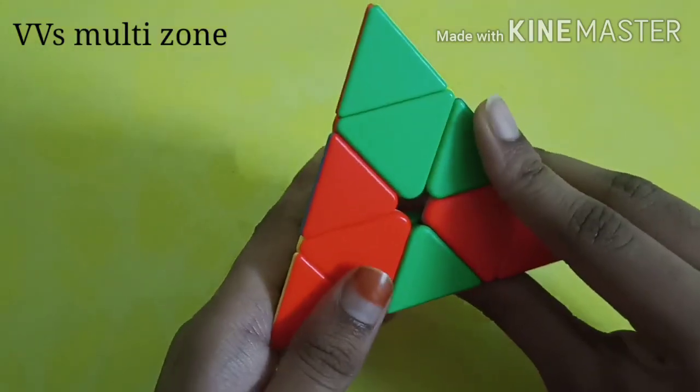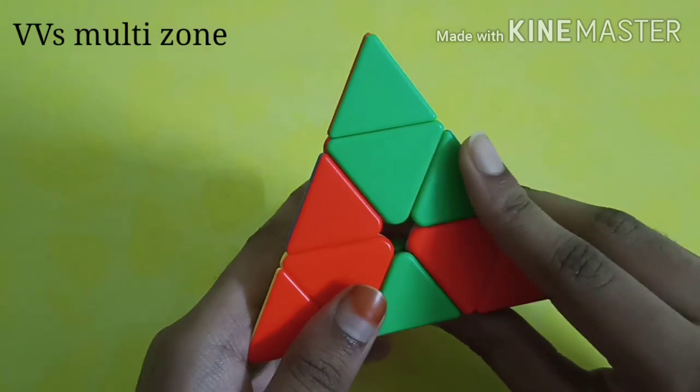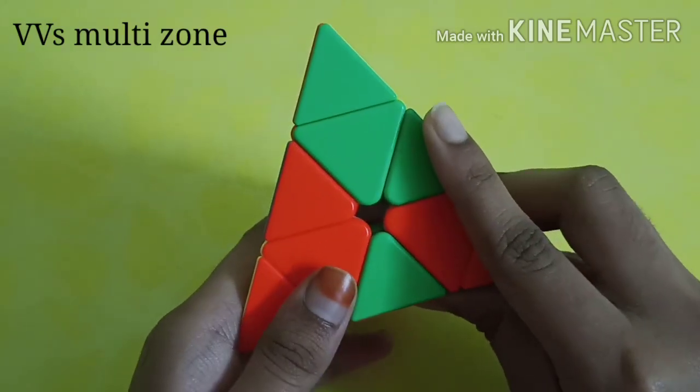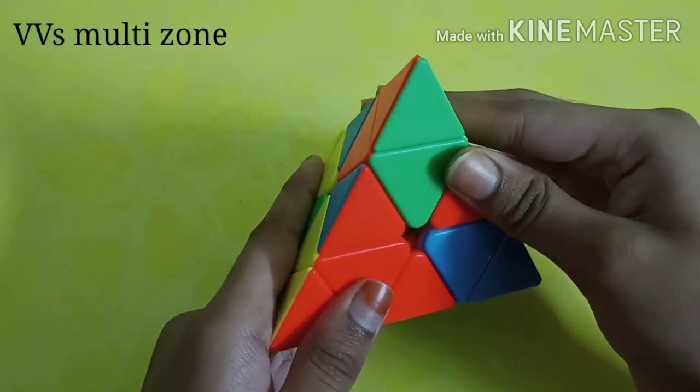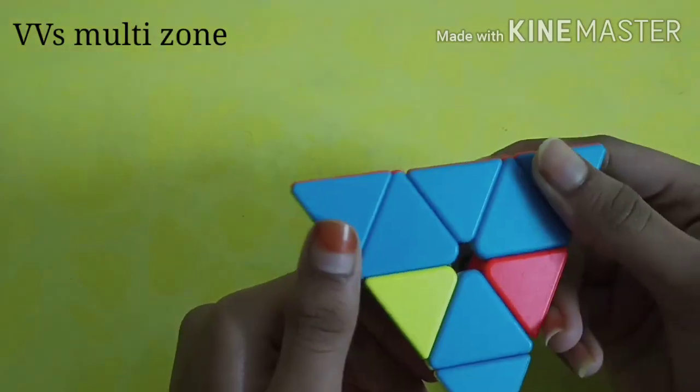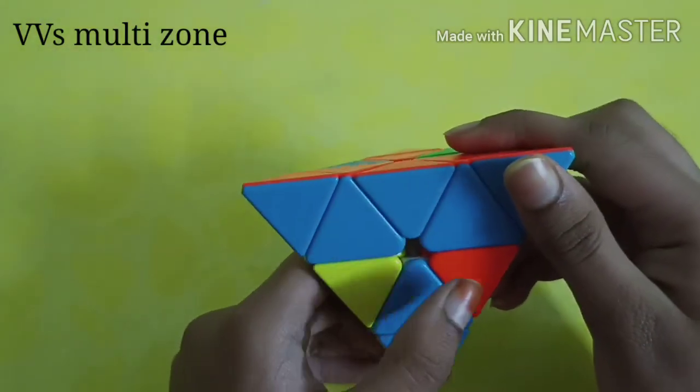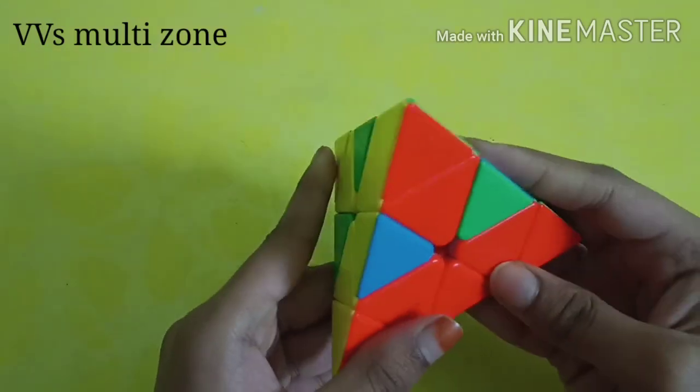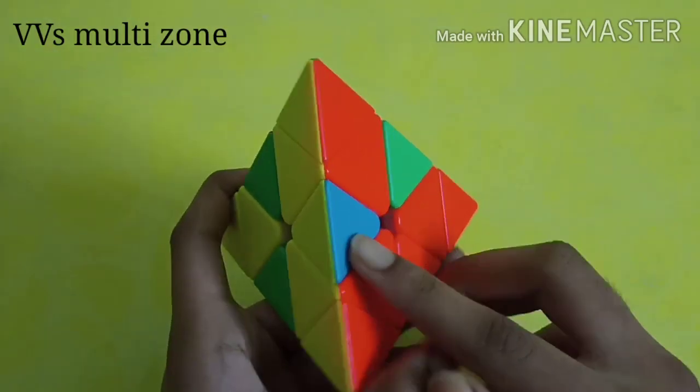I perform here the right algorithm which is very important for you to observe. You have to keep right, up, and right inverse. You can see the blue which was here is solved and another blue is here.